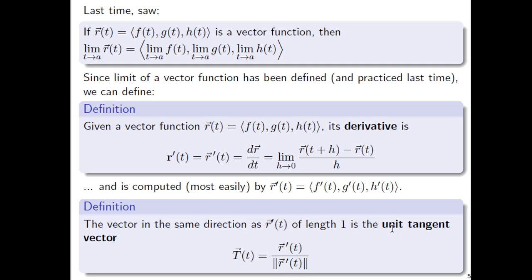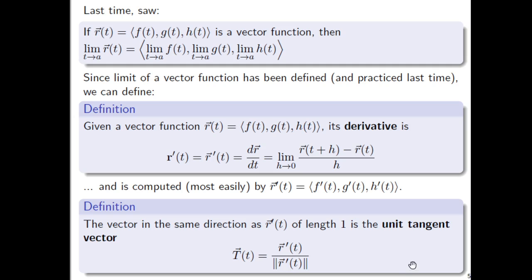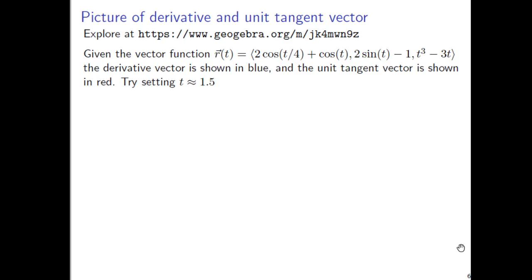And then as long as we're doing this, one other definition, the vector that's in the same direction as the derivative of length 1, so if we were to normalize, we get what's called the unit tangent vector. The whole point of the unit tangent vector is we just sometimes want to know what direction without having a magnitude kind of attached to it, so then by convention we're just going to say we'd only look at vectors of length 1. That's when we're looking at the unit tangent vector.